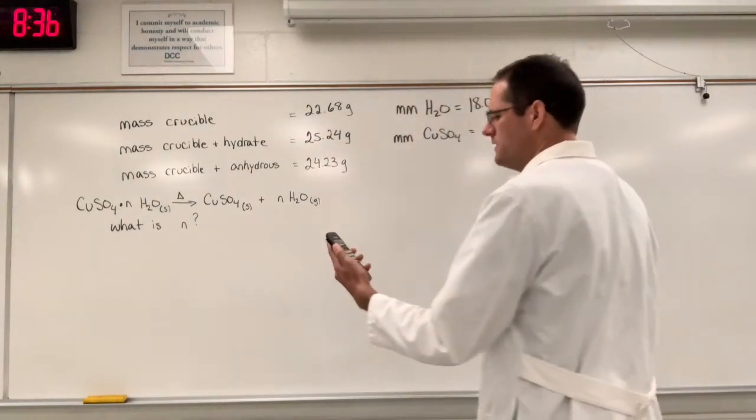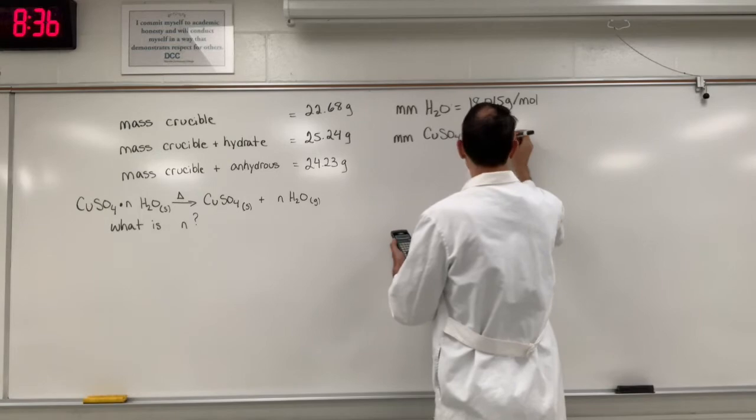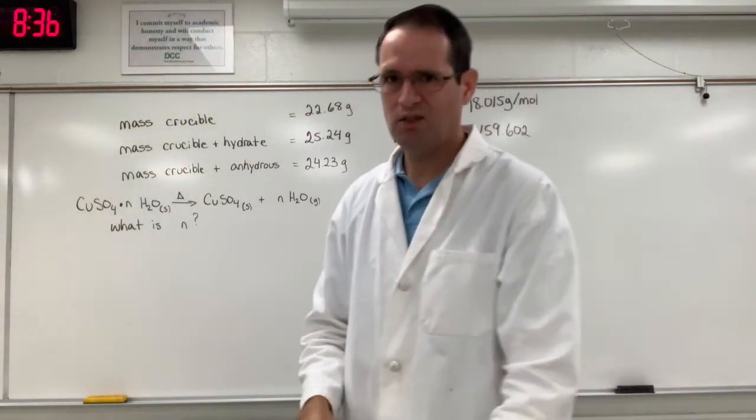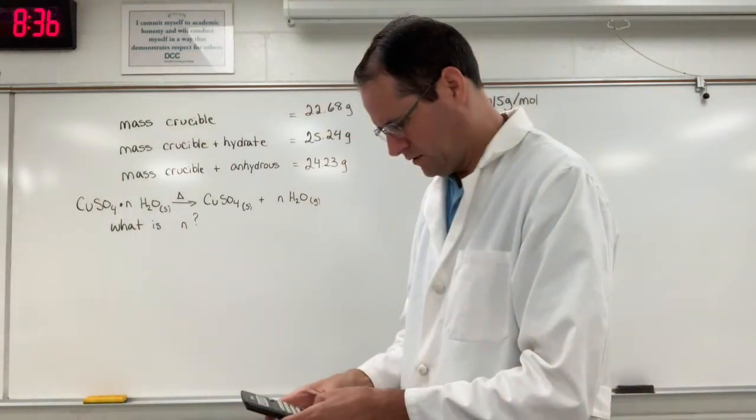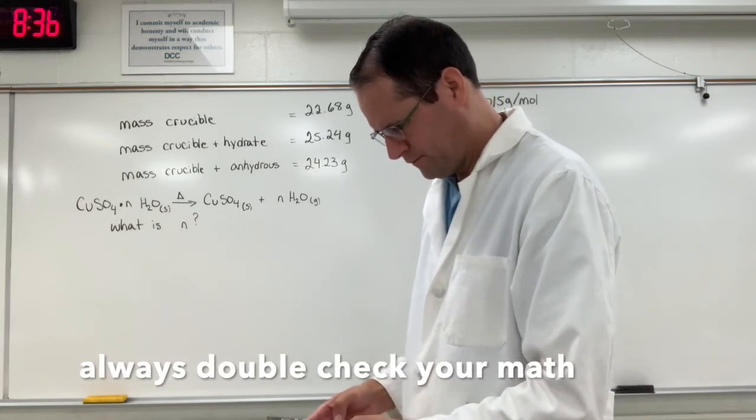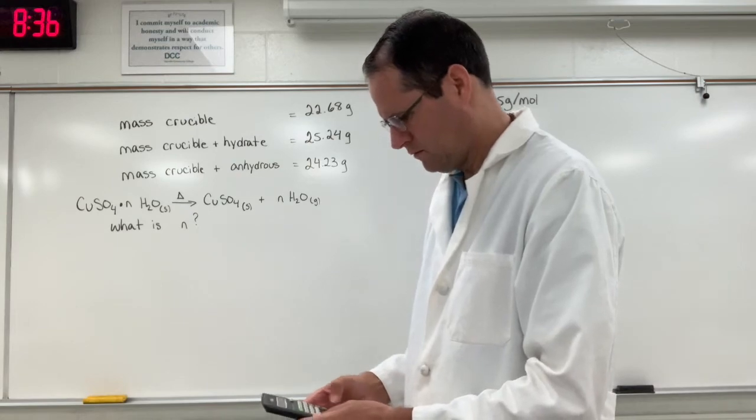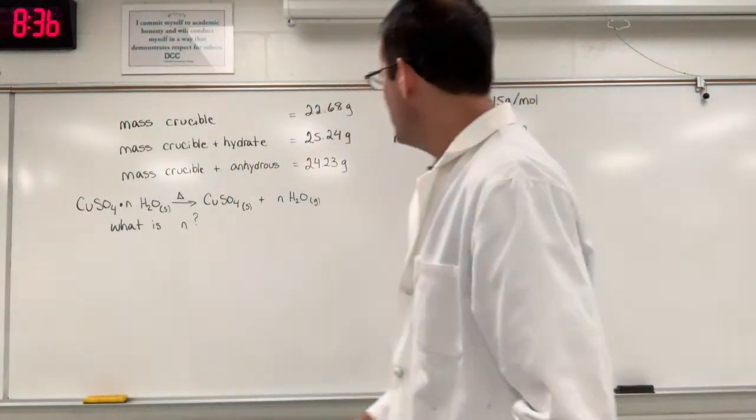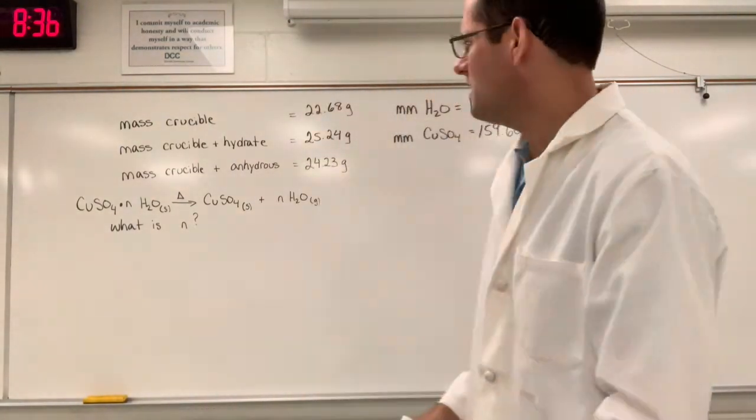So here we go, 159.602. Now I'm going to check this so the whole video is not wrong. Great. Got the same answer twice. All right. So that's it. We're done with the periodic table. Not with a calculator though. So let's do the steps.